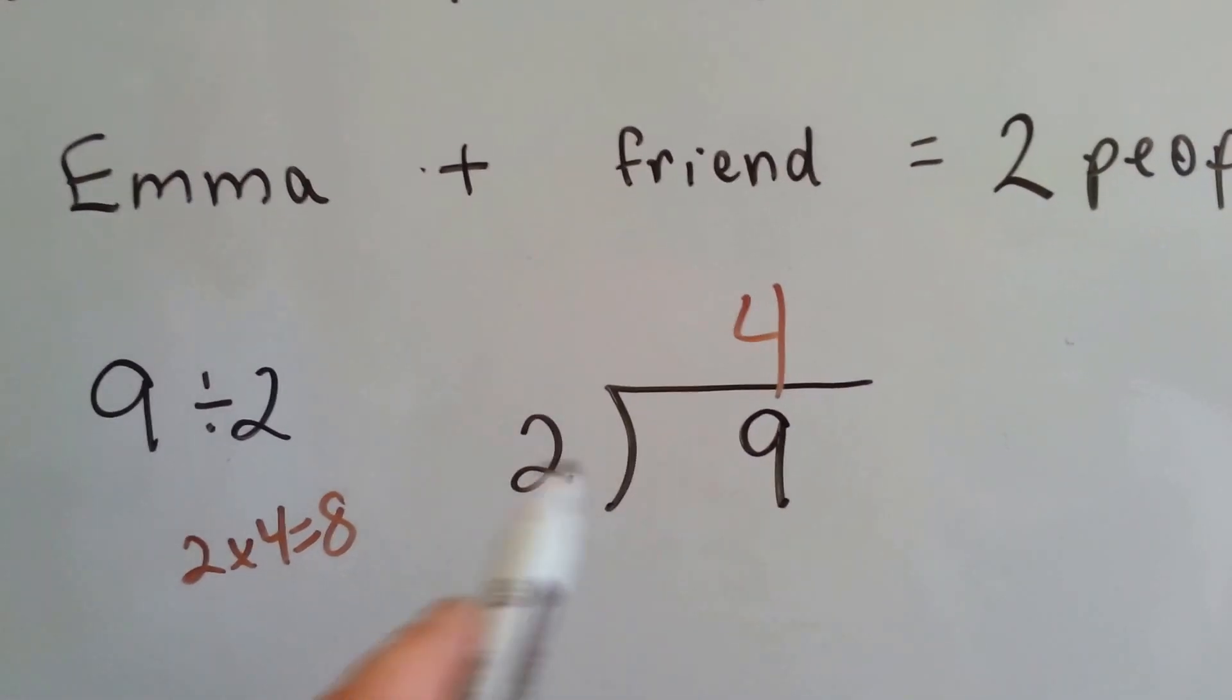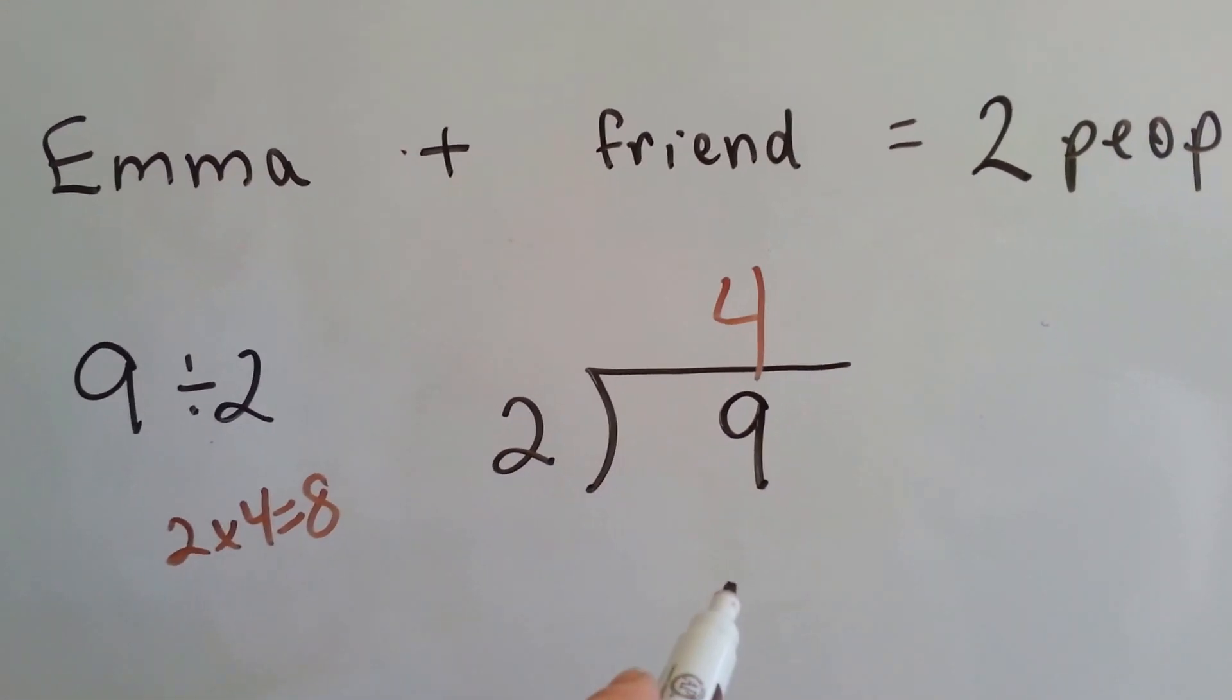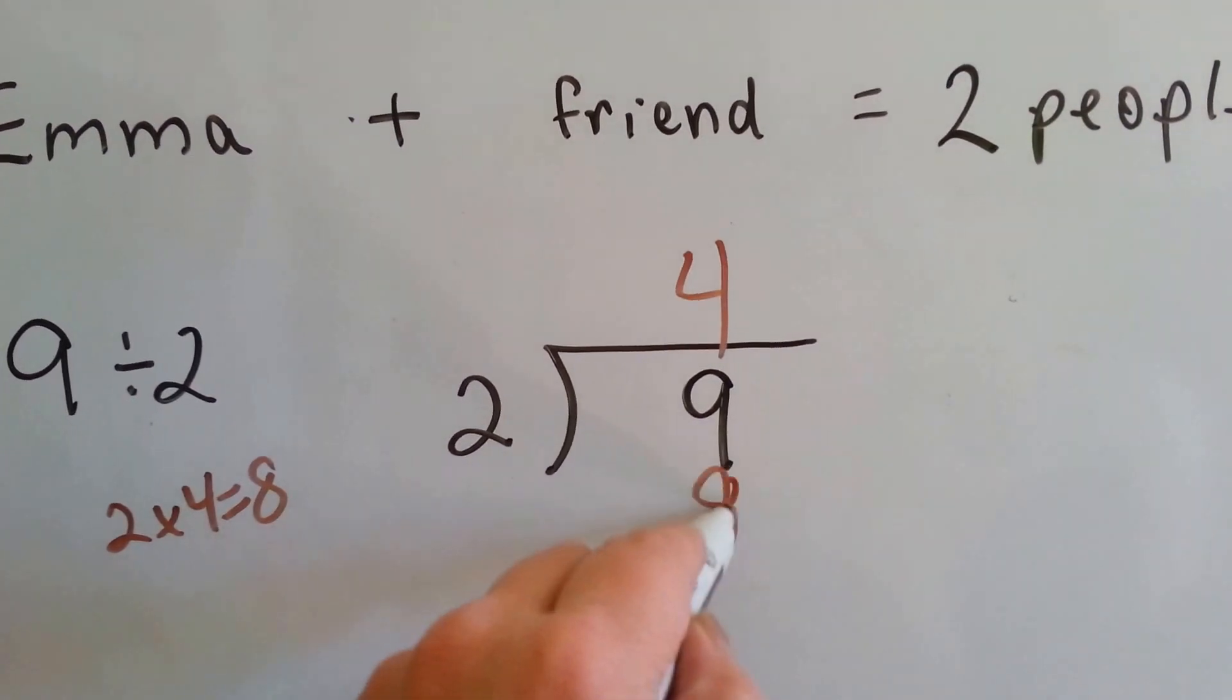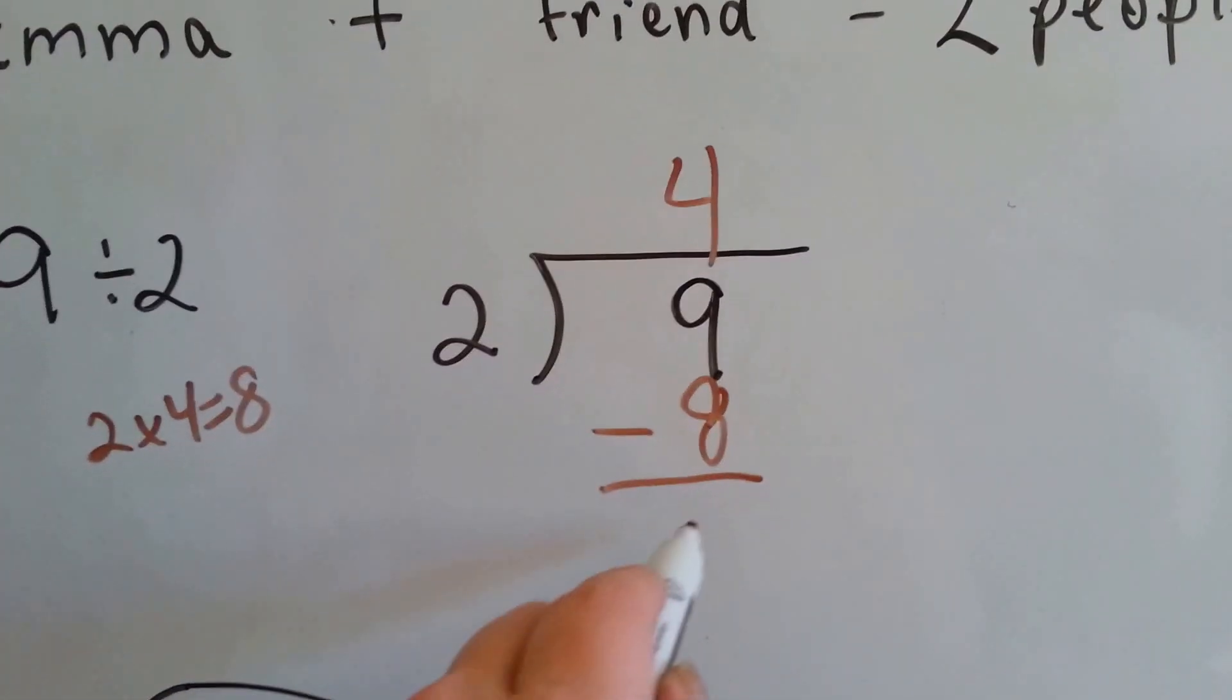Because we can't go over nine, we can only get close. You're not allowed to go over. Two times four is eight. We do our subtraction and that leaves one.